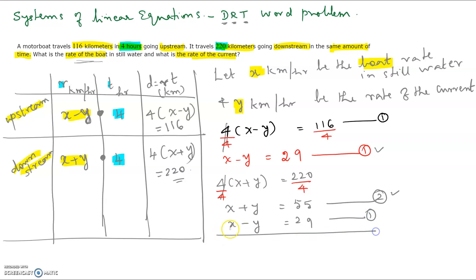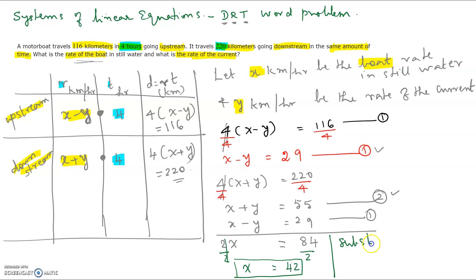We are going to add the two equations. Since the y coefficients are equal and opposite, we add them. Adding x minus y equals 29 and x plus y equals 55 gives 2x equals 84. Dividing both sides by 2, we get x equals 42. To solve for y, substitute x equals 42 into equation 2: 42 plus y equals 55, so y equals 55 minus 42.